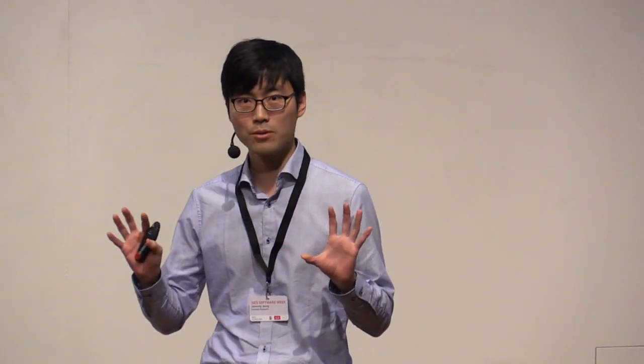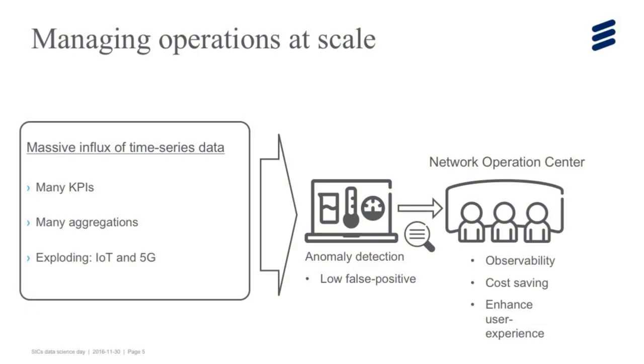By adding the anomaly detection in between, we can let this anomaly detection filter out the normal behavior in the network and only report the important anomalies to the network cooperation center. Then they can obtain this observability on the network and do cost saving. And by taking an agile action on this anomaly, they can enhance user experience as well.